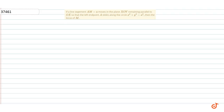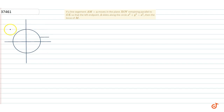The question is: if a line segment AM moves in the plane XOY remaining parallel to X, so that the left-hand point A slides along the circle x² + y² = a², then find the locus of M. The circle diagram shows x² + y² = a², and the line AM with point A and point M marked.